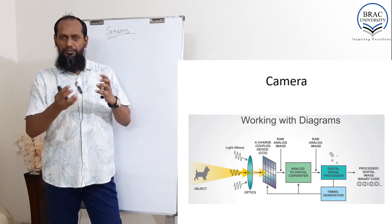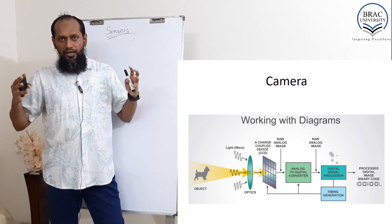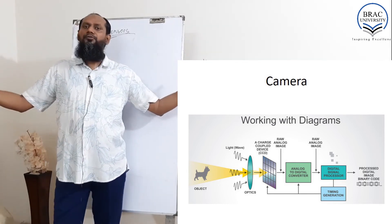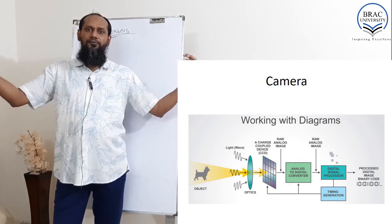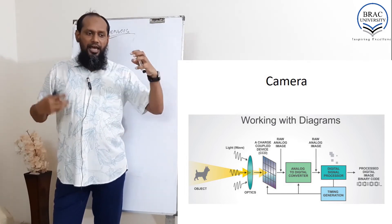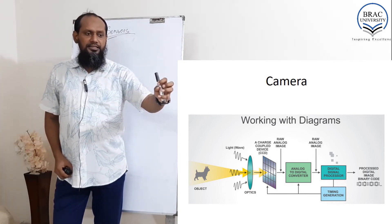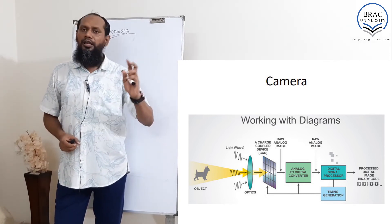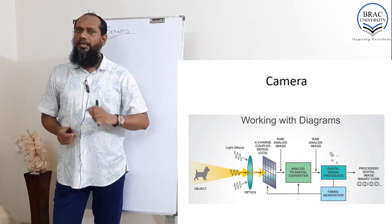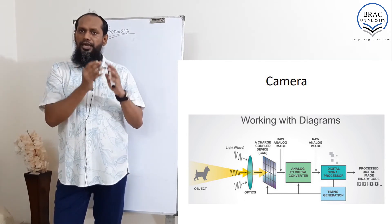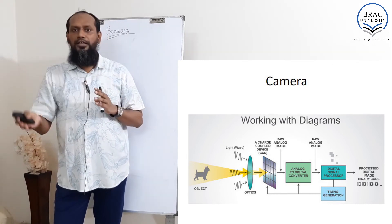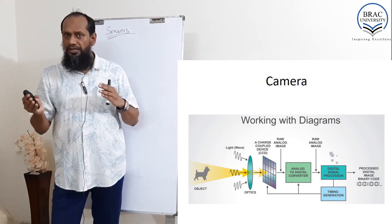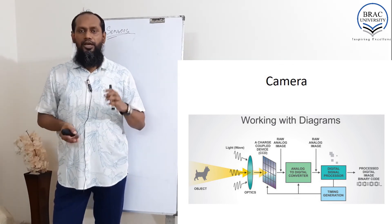What is actually happening: light comes from the sun or a light source, reflects from our body, and through a lens it is focused onto the CCD. The lens is used for focusing. The CCD is the sensor that generates an electric signal based on the light — based on the RGB values it produces an electric signal.